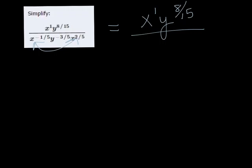So in my calculator I would type negative 1 plus 2 fifths. And my calculator makes it a decimal, but I know how to switch it to a fraction. So I get x to the negative 3 fifths.